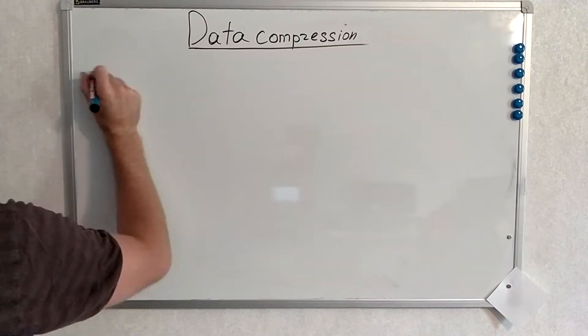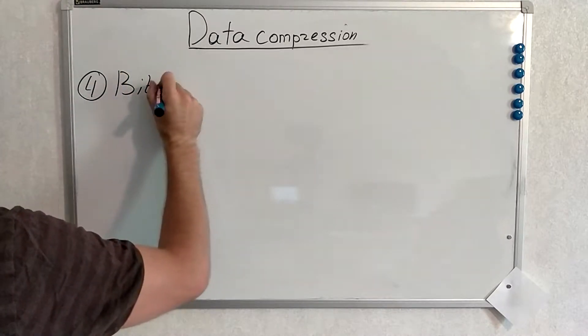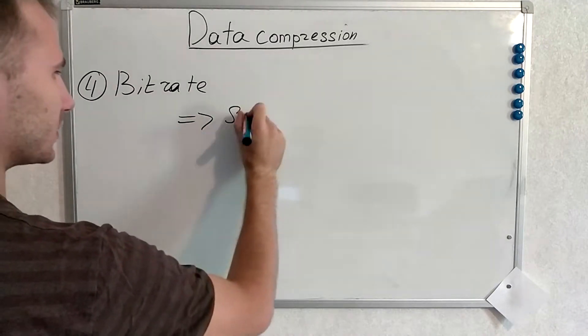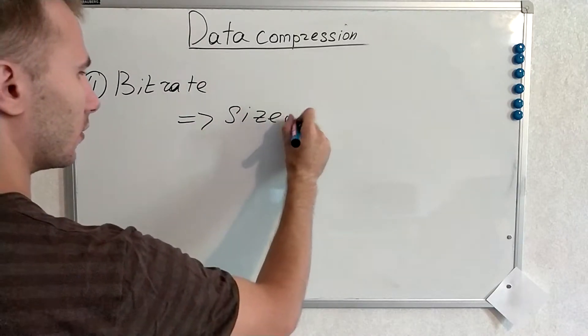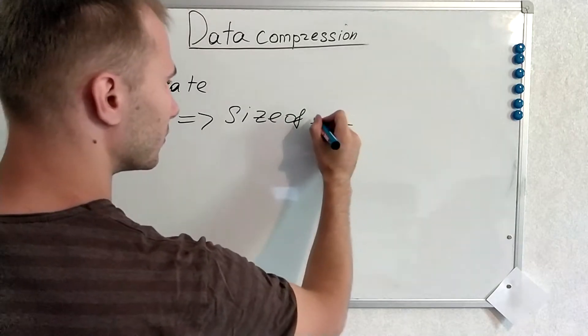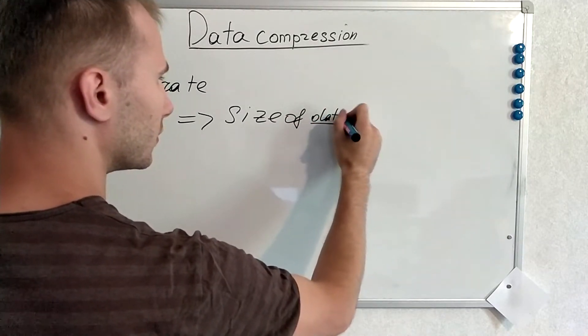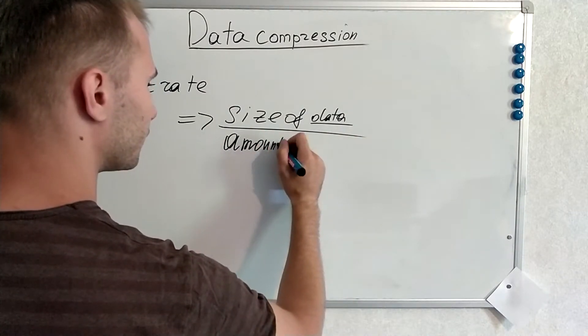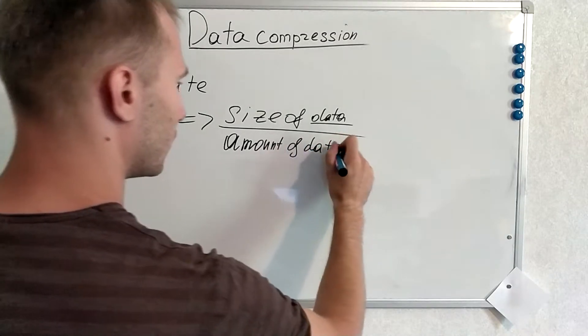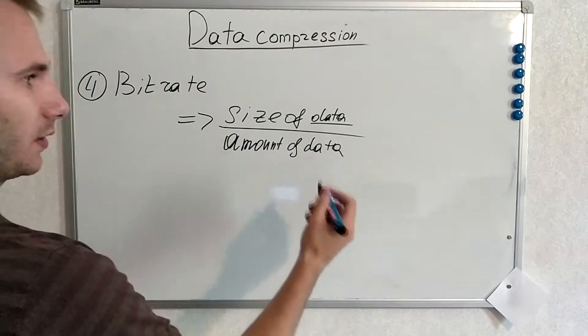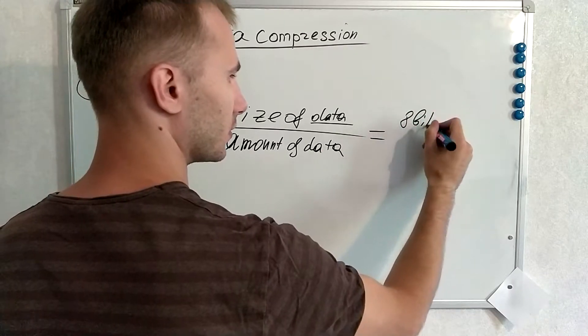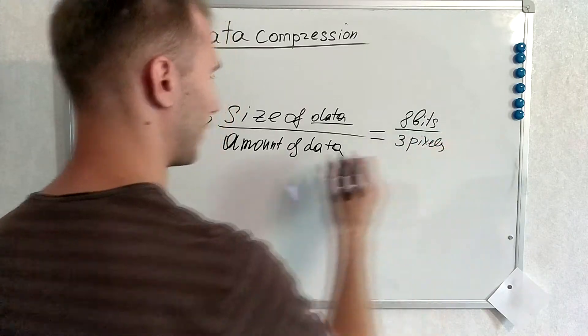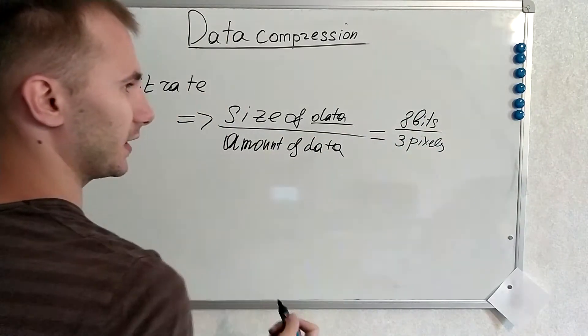Next definition is bitrate. Actually it's the size of our data divided by amount of our data, which means that for example 8 bits, 3 pixels. So amount is 3 pixels and size is 8 bits.